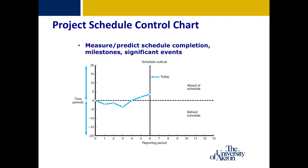Another tool used to track project progress, at least for schedules, is the Project Schedule Control Chart. The x-axis notes the reporting period being measured — in this case 13 periods shown. The y-axis notes the number of duration and time periods, which could be hours, days, or weeks — representing how far ahead or behind the project baseline the project is. The baseline is represented by a dotted line in the middle. Reporting periods behind schedule show up below the dotted line; those ahead of schedule show up above it.